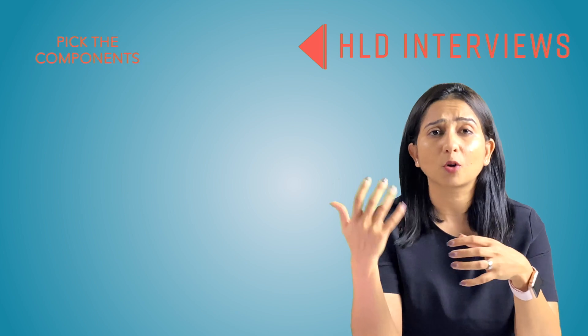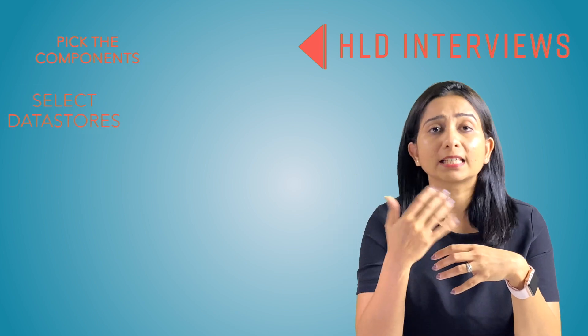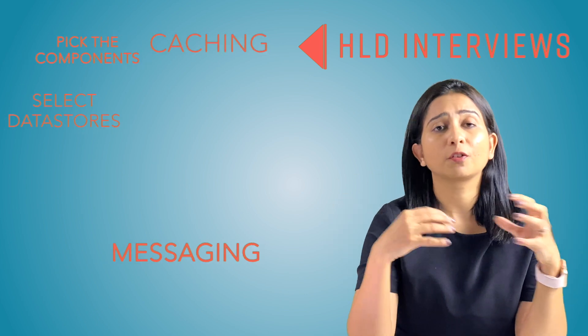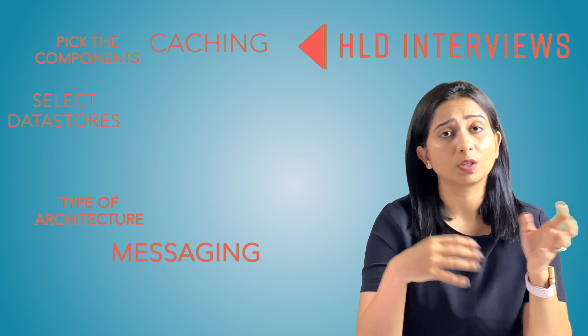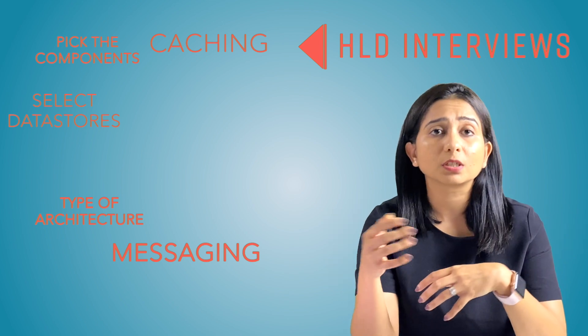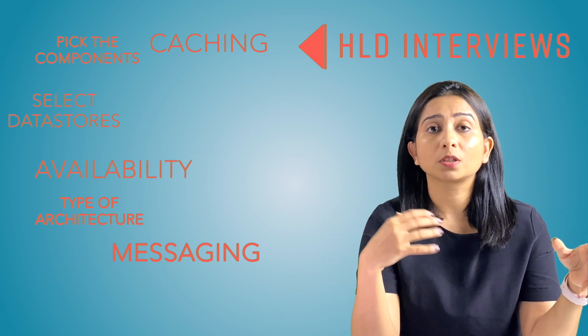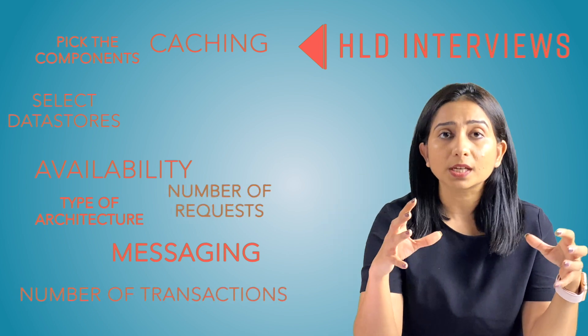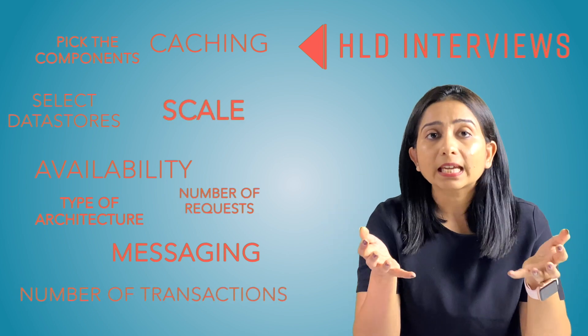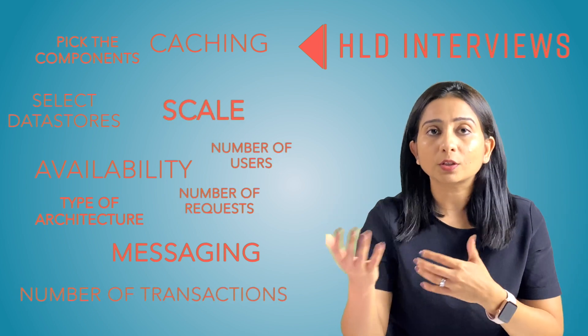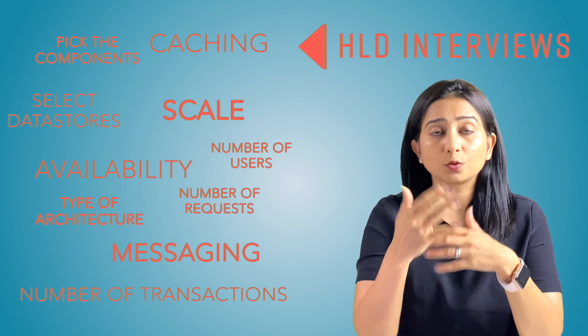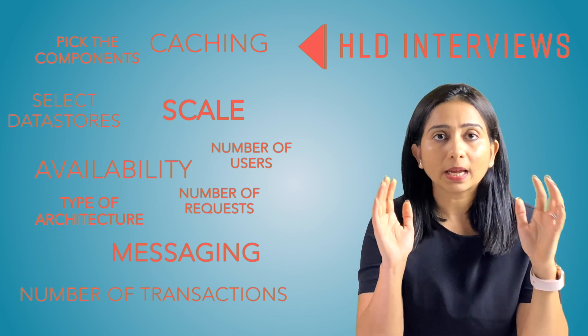In a high-level design interview, you are given a whiteboard and you have to draw out the whole system. You have to pick the components, select data stores, caching, messaging, different types of architectures — maybe event-driven, maybe transactional. You have to think about availability, the number of transactions, number of requests, the scale, the number of users, and then come up with an overall architecture.